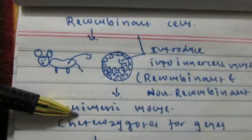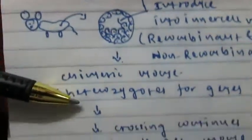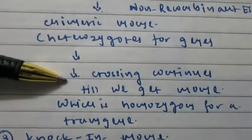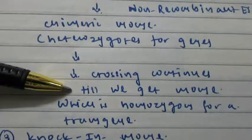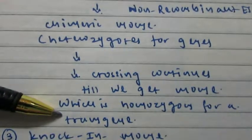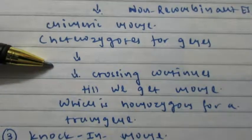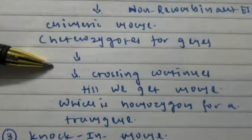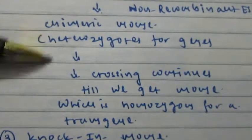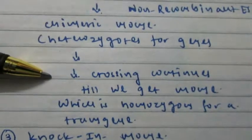This chimeric mouse may again be test-crossed with another chimeric mouse, until we get a pure strain of mouse which is purely homozygous for our targeted transgene. This procedure seems simple, but generating a knockout mouse at lab scale is hard work of three to four years, and it is very costly.